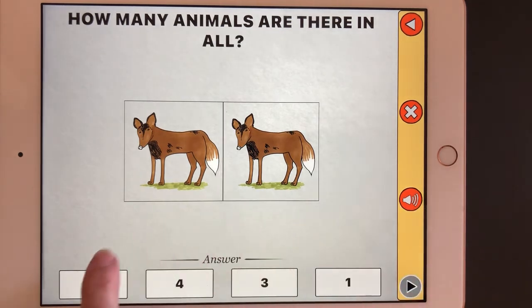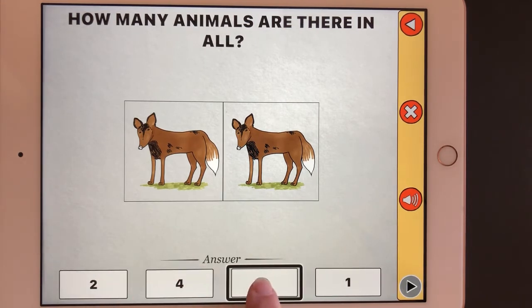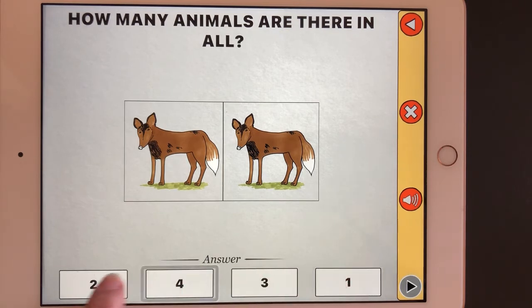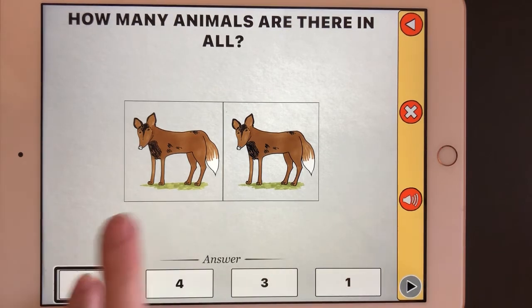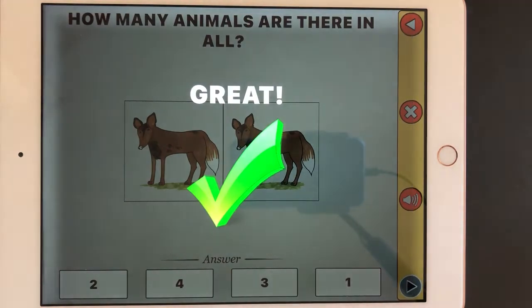Now if I drag to the bottom left, my answer choices are two, four, three, one. I'm going to go back to two and split tap.